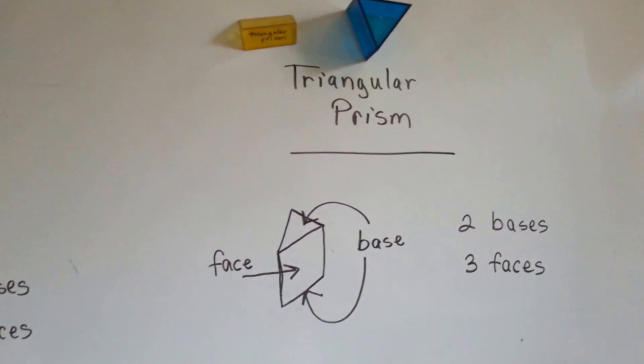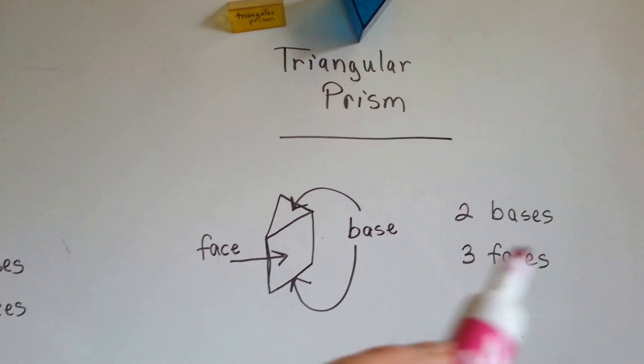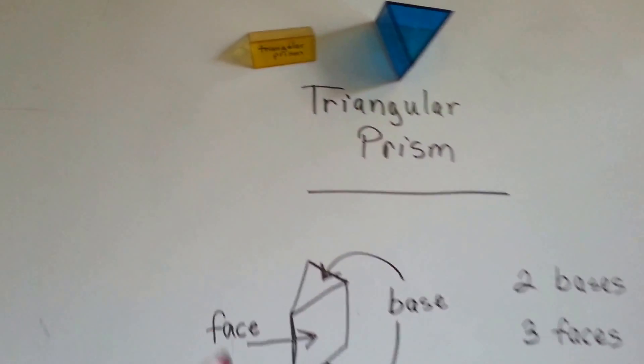Now, we have a triangular prism. It's got two bases and three faces. So, let's take a look.